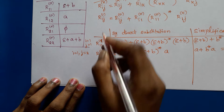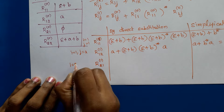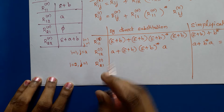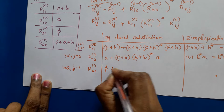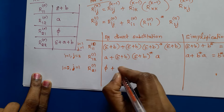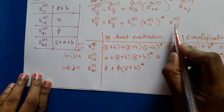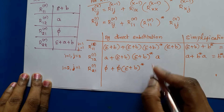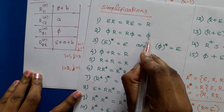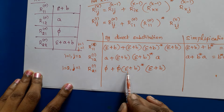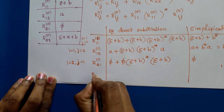For r21 to the power 1, i is 2 and j is 1. Substituting: r21^0 is phi, plus r21^0 which is phi, concatenated with (epsilon plus b star), concatenated with r11^0 which is epsilon plus b. Since phi concatenated with any regular expression is phi, and phi plus phi is phi, the result is phi. So r21 to the power 1 is phi.